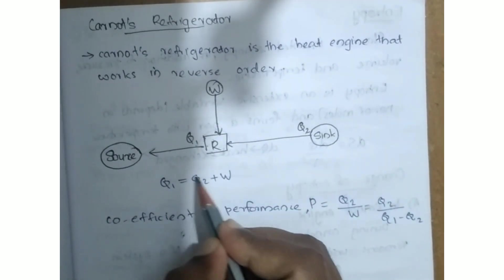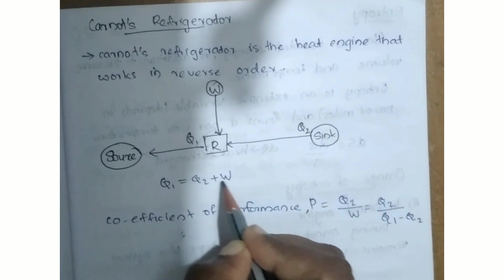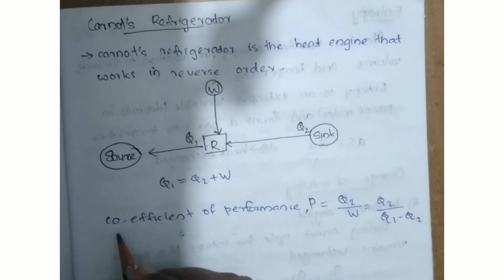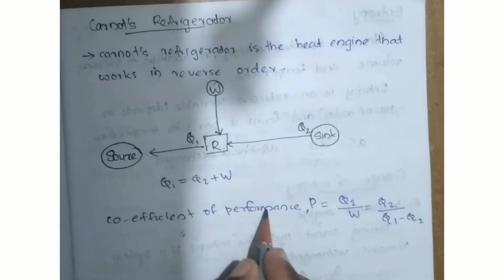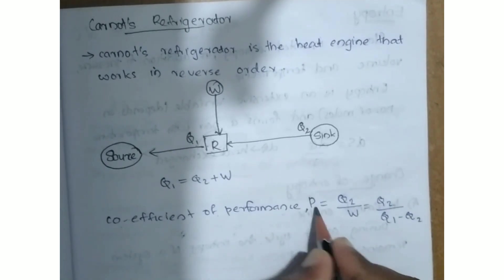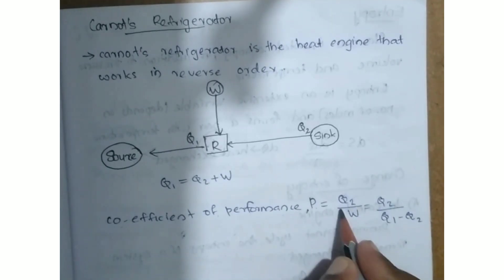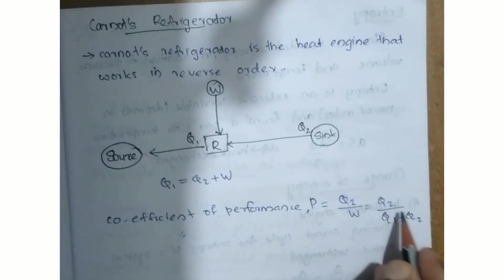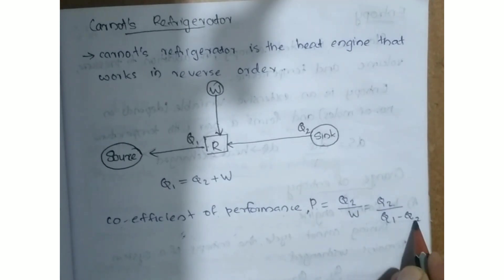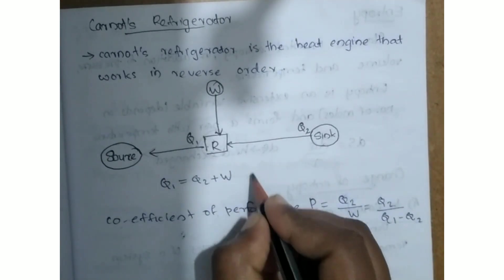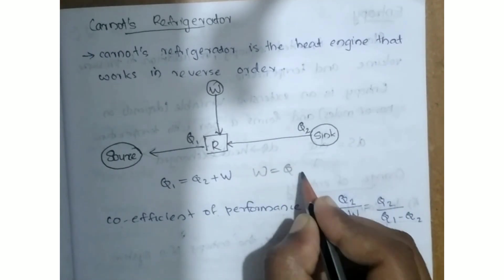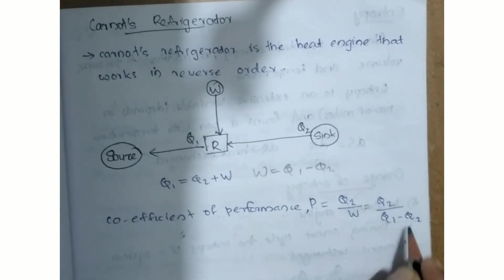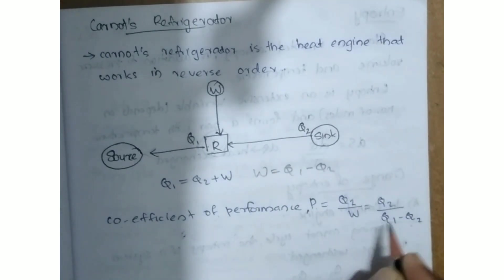The coefficient of performance beta is equal to Q2 divided by W, which equals Q2 divided by (Q1 minus Q2).